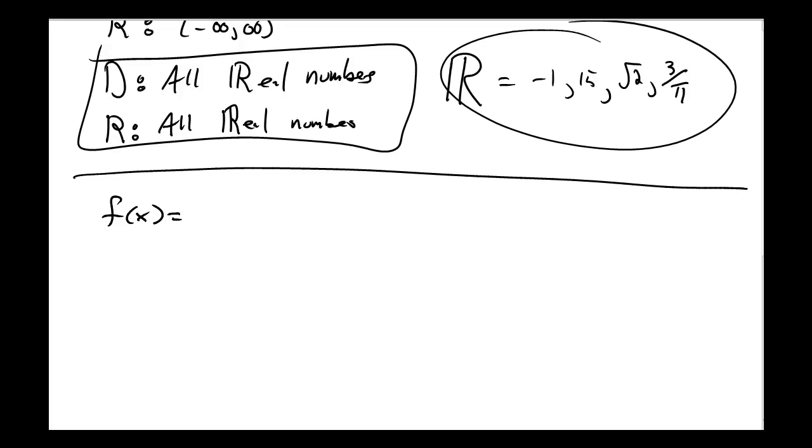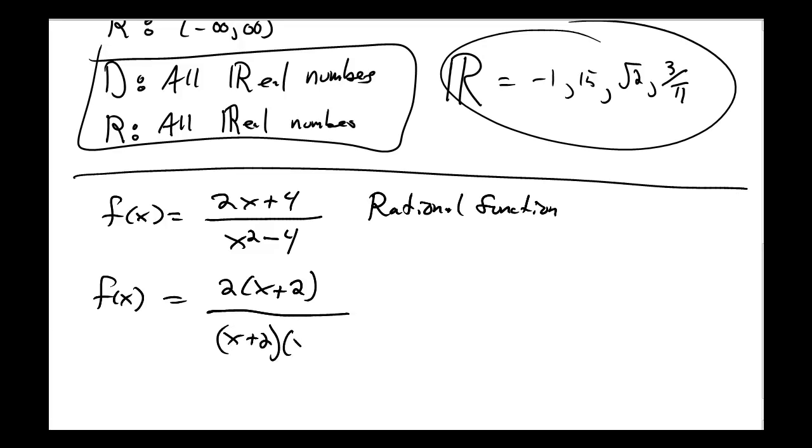I could have the function f of x equals 2x plus 4 all divided by x squared minus 4. This function can be factored. This is called a rational function. And I can manipulate this function a little bit. I can pull out a common term on the top and on the bottom, this factors to be x plus 2 times x minus 2.